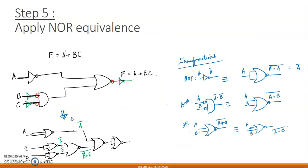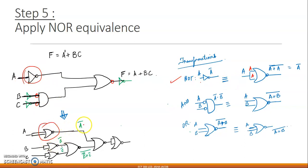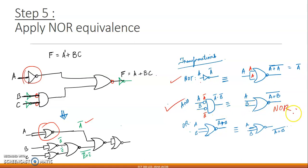Now we apply the NOR equivalents. For a NOR gate equivalent of a NOT gate: give the same input A to both inputs of the NOR gate, giving A + A whole bar = A̅. For every AND gate with bubbles at the inputs: inputs become A̅ and B̅, output is A̅·B̅. By De Morgan's theorem, A̅·B̅ = A + B whole bar, which is our NOR gate. So every AND gate with bubbled inputs is equivalent to a single NOR gate.